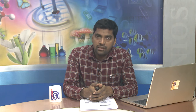We can discuss how different Scheduled Tribes are distributed across states. Looking at the share of tribal population to the total state population: Lakshadweep has 94.8 percent, Mizoram has 94.4 percent, Nagaland has 86.5 percent, Meghalaya has 86.1 percent, and Ladakh has 79.5 percent. For the bottom five states: Uttar Pradesh has 0.6 percent, Tamil Nadu has 1.1 percent, Bihar has 1.3 percent, Kerala has 1.5 percent, and Uttarakhand has 2.9 percent.